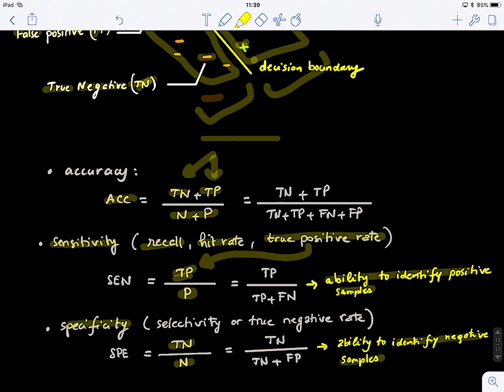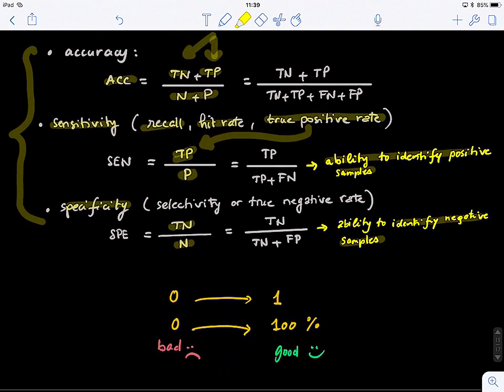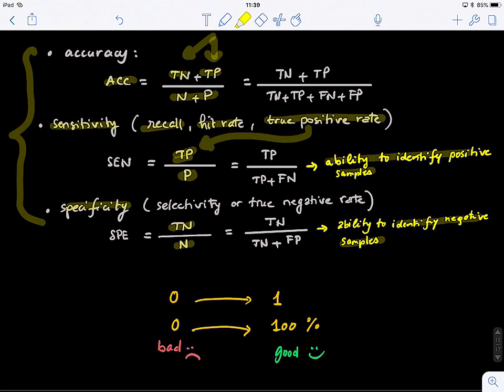So these are the three measures that are commonly used to evaluate the classifier performance. These measures, all of them, they vary between 0 and 1. So 1 is a maximum. It means it's a perfect classification. So if you multiply it by 100, you can turn this to a percentage. So this means their classifier is good. This one, it means it's bad.